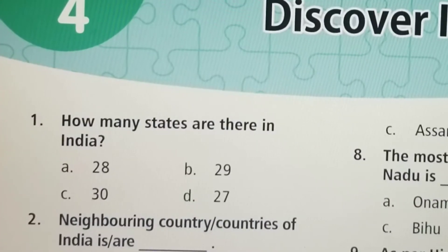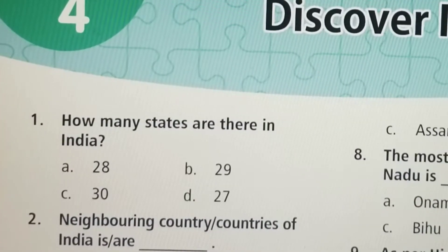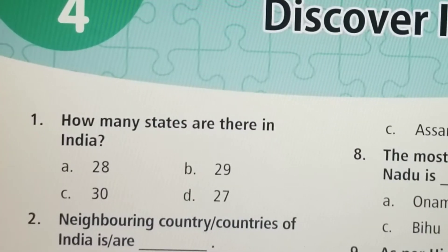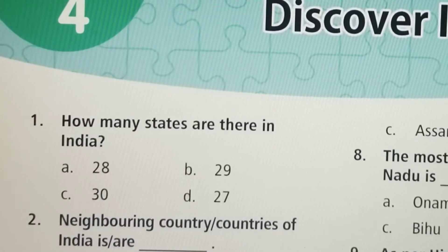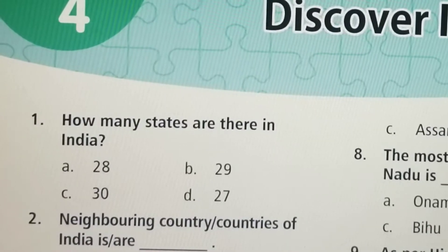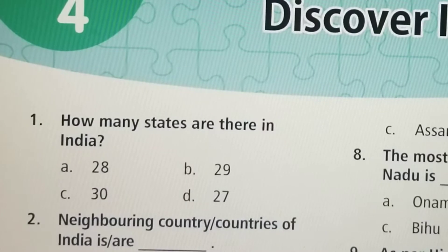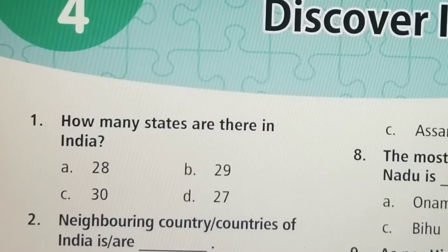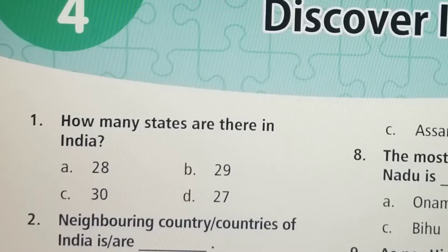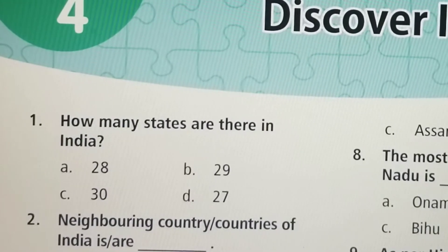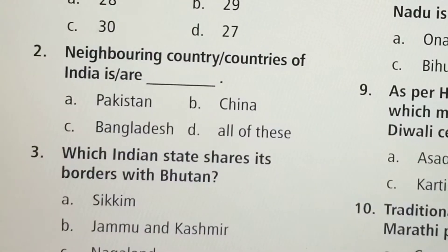First question: How many states are there in India? Option A: 28, Option B: 29, Option C: 30, Option D: 27. Option A, 28, is the correct answer.